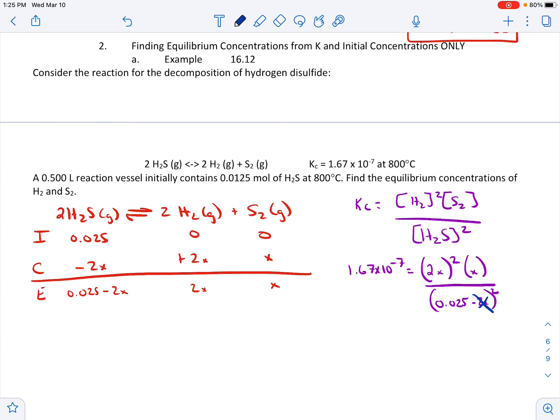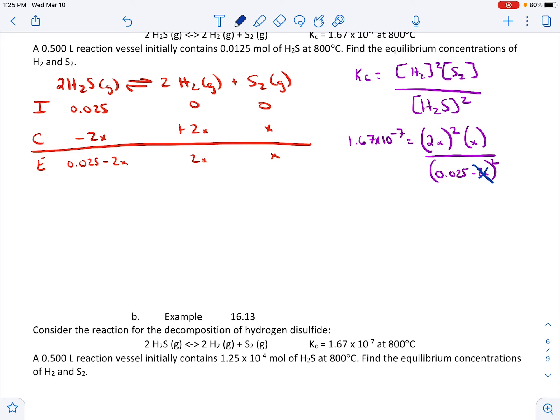We can't eliminate all the X's, but we can eliminate the minus X's. Now we've got 1.67 times 10 to the negative 7th is equal to 2X squared times X over 0.025 squared. This looks so much simpler. On top, we're going to have 4X to the third because 2X and then squared becomes 4X squared, and then times another X gives us 4X to the third. On the bottom, we're going to take 0.025 and square that, which is going to give us 0.000625. And X is going to come out to 2.97 times 10 to the negative 4th.